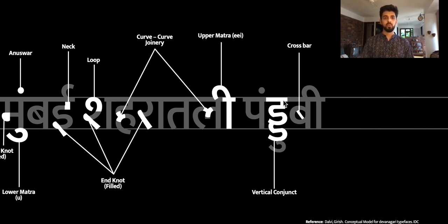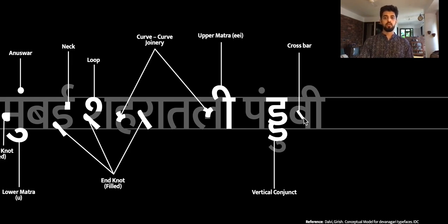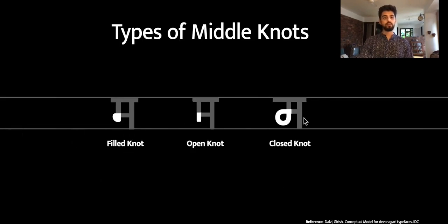The next one is a vertical conjunct where two consonants are joined vertically, and then there is a crossbar in the letter ba. It's also seen in the letter sha. Now we'll get into different types of these features.